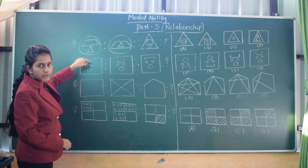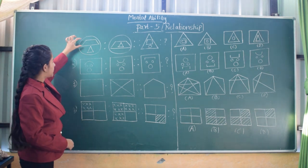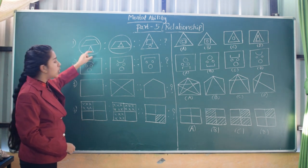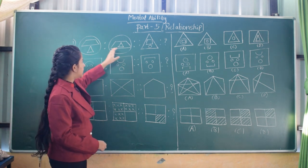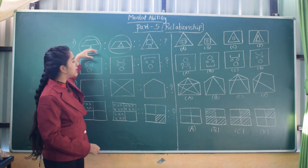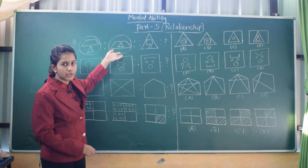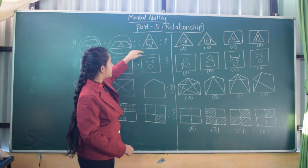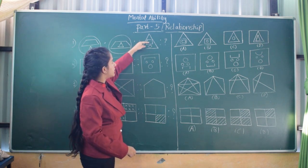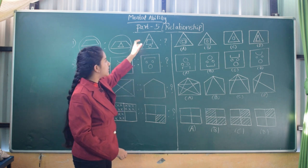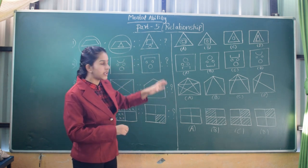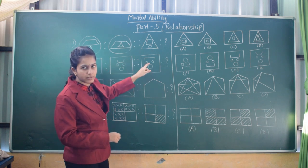In the first figure, there is a circle. Inside the circle, there is a four-lined figure, and below that figure there is a triangle. In the relationship figure, the triangle is inside the four-lined figure. In the next question figure, there is a triangle, a square, and a circle below the square. So in the relationship figure, the circle should be inside the square — that kind of figure will be the answer.